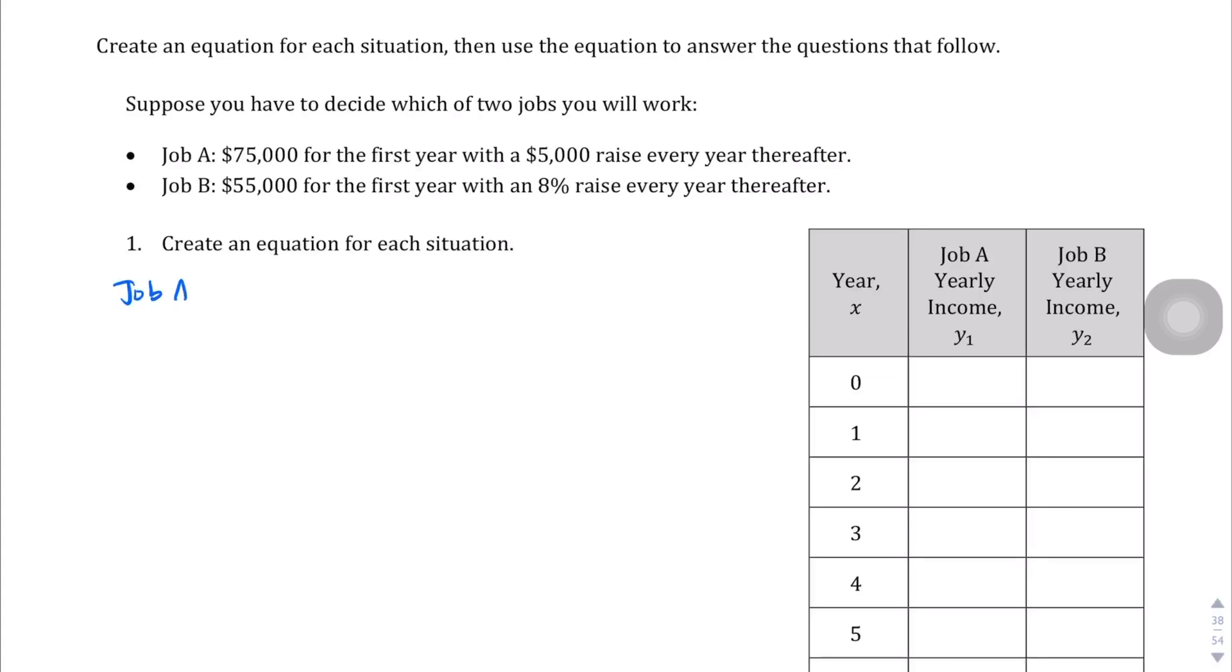Let's create equations for each situation. First, for job A, the equation we're going to write is $75,000 is your initial value that you get, plus you get an additional $5,000 raise every year after that. So we're going to write $5,000x, where x is the number of years. And then that's your function, that's your f(x). So job A is $75,000 plus $5,000x equals f(x).